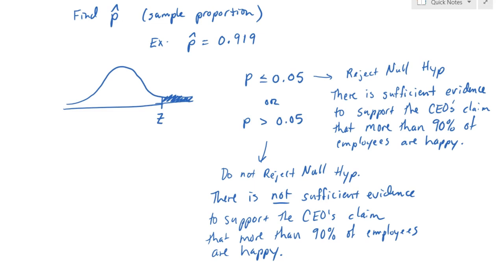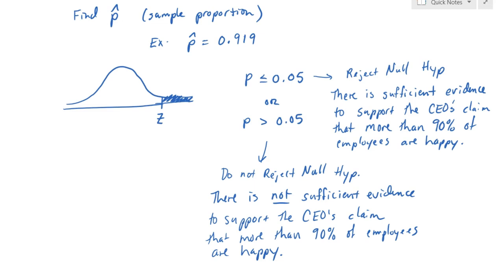When making a conclusion based on a hypothesis test, the only possibilities are that the evidence supports one of your hypotheses or that there's not enough evidence to support it. We never prove anything because we're using random samples. So your conclusion should never be that we accept the null or accept the alternate hypothesis — we're simply deciding if we have enough evidence to reject the null or not.